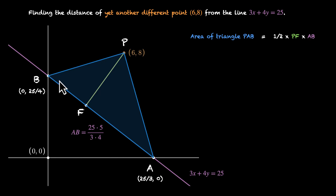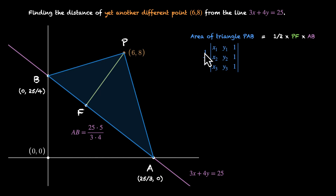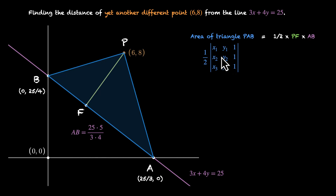The area of a triangle with coordinates (x1, y1), (x2, y2), and (x3, y3) is given by the determinant: half times |x1, y1, 1; x2, y2, 1; x3, y3, 1|. Expanding row-wise, that equals half times [x1(y2 minus y3) minus y1(x2 minus x3) plus 1(x2·y3 minus x3·y2)]. We take the products with alternating signs plus, minus, plus.